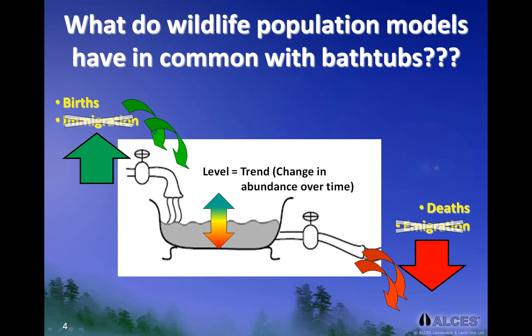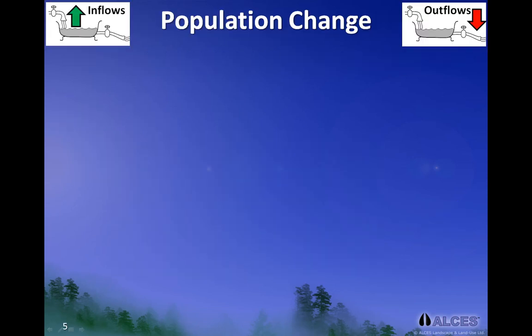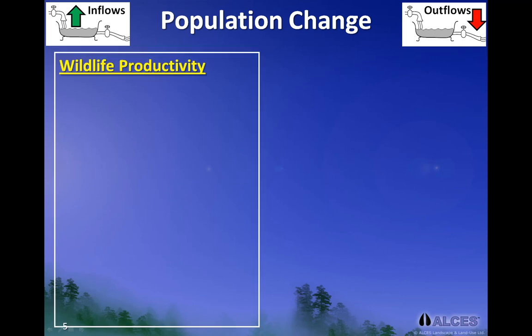If you think back to video 1.2, you will recall that we introduced the concept of a bathtub or a stock and flow model to help us understand why wildlife populations change over time. If we apply the concept that a population increases through the number of animals born into the population and equate that to inflows in the stock and flow model, we can group many of the information needs of the model as data that directly or indirectly influence productivity of the population.